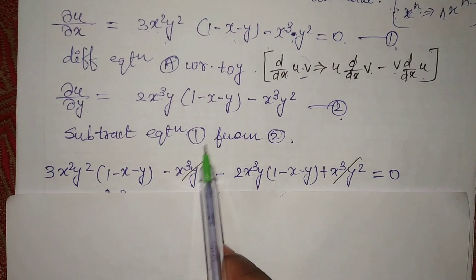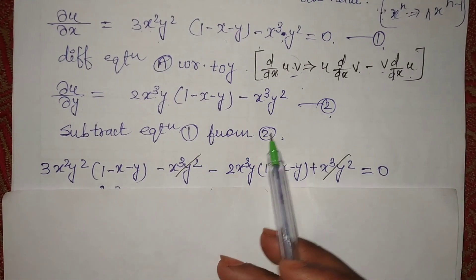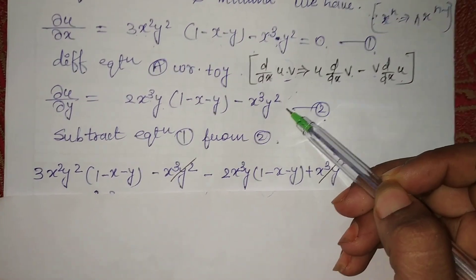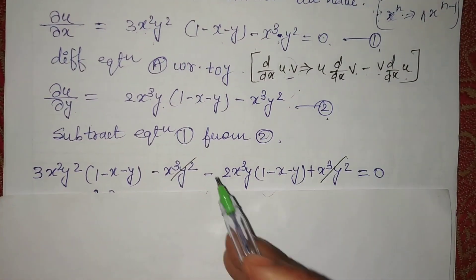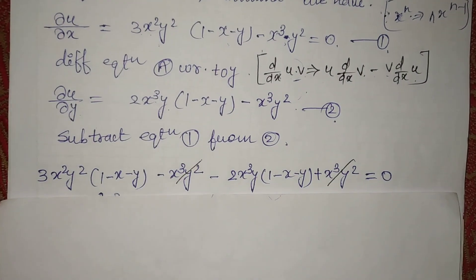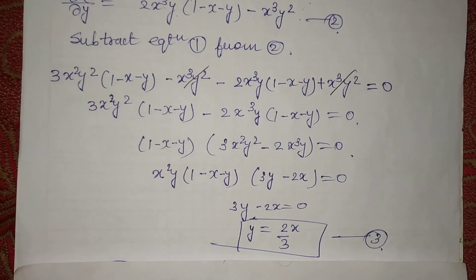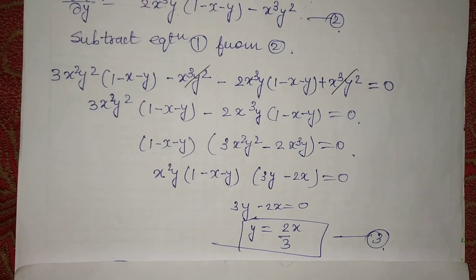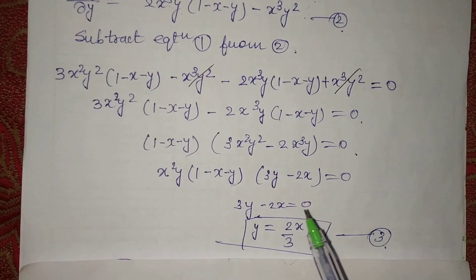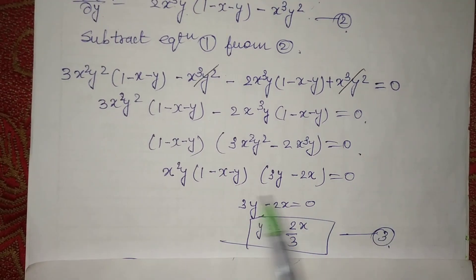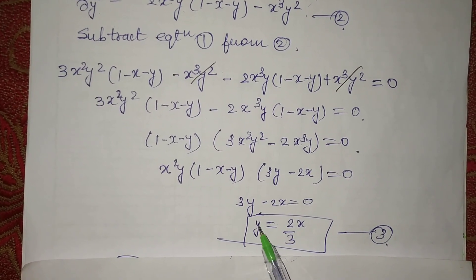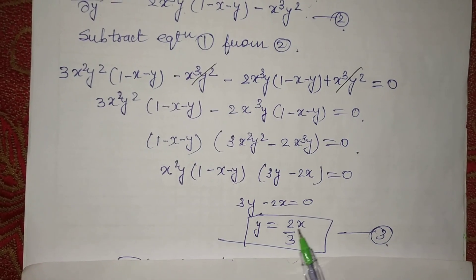Let's subtract equation first and equation second. I have subtracted these two equations and solved them. At the end we get: y is equal to 2 by 3x.